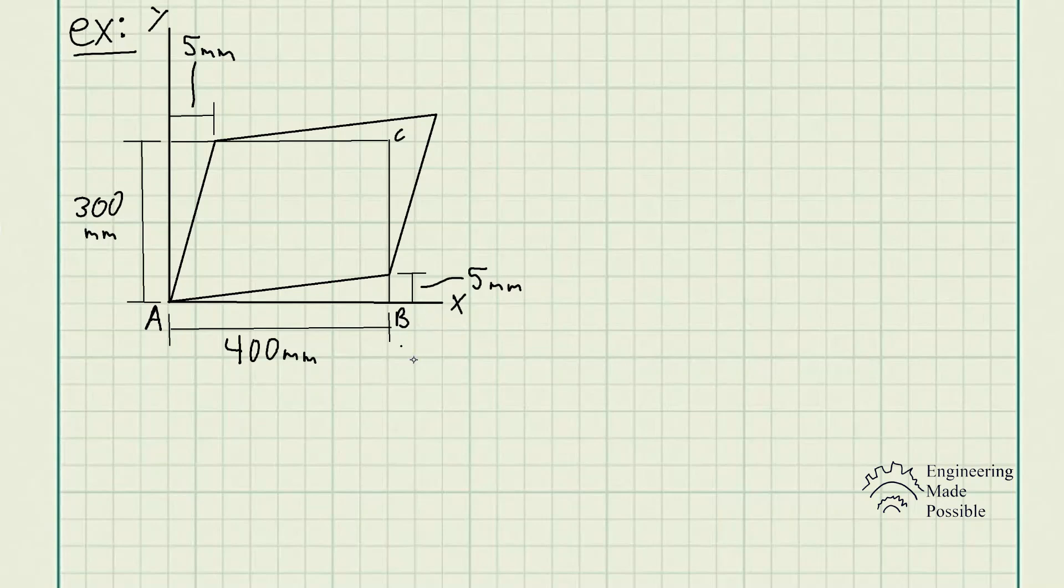This problem statement says the rectangular plate was deformed into a parallelogram as shown here. Determine the shear strain at corners A and B.